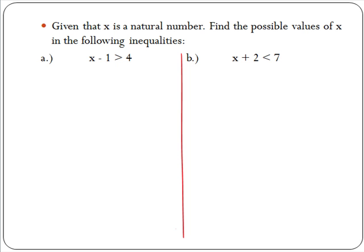Let's look at some examples of this. We are asked: given that x is a natural number, find the possible values of x in the following inequalities. In part a we are asked x minus 1 is greater than 4. We need to add 1 to both sides to get x by itself. So we have x minus 1 plus 1 is greater than 4 plus 1, giving us x is greater than 5.